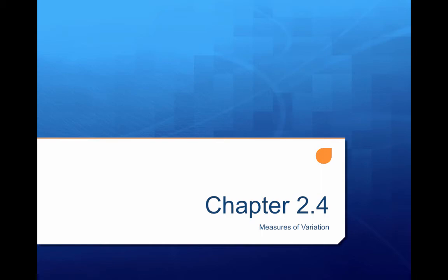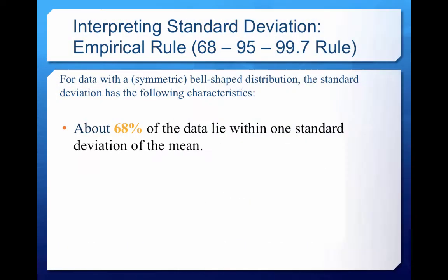Let's finish up measures of variation. Now we want to talk about what's called the empirical rule and Chebyshev's theorem. The empirical rule is oftentimes also called the 68-95-99.7 rule.